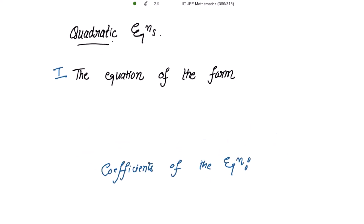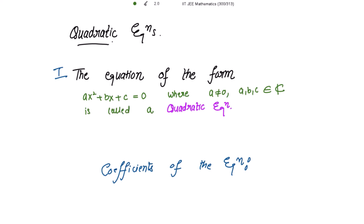The definition is: the equation of the form ax² + bx + c = 0, where a is non-zero and a, b, c all belong to the set of complex numbers. This is called the quadratic equation, and the numbers a, b, c are the coefficients of the equation. Let me mark this equation as 1.